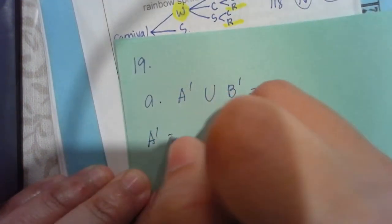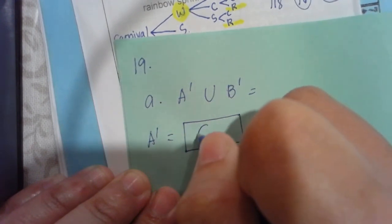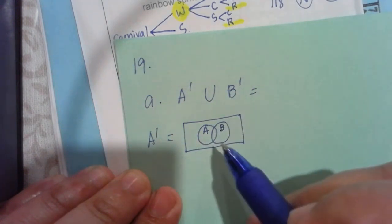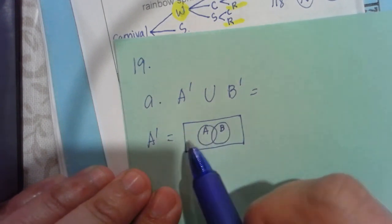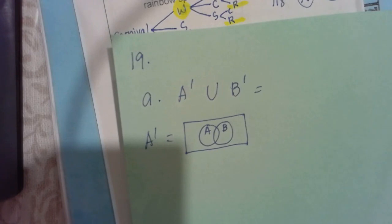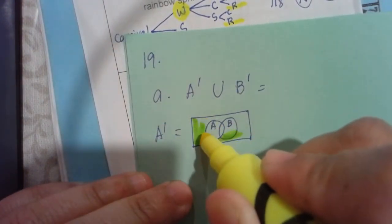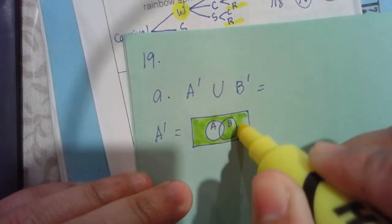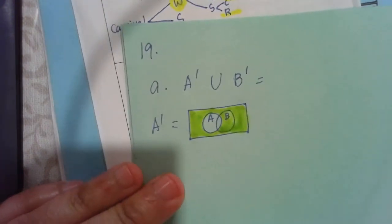So A prime. To represent A prime, we're going to draw the universal. The two circles that represents the A and the B. Since we run B prime, meaning we're going to shade all everything except for A.